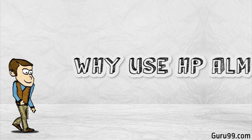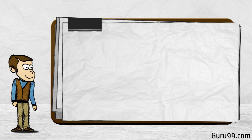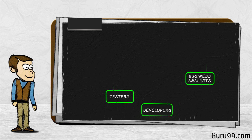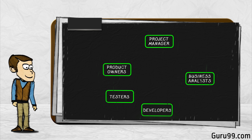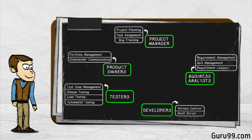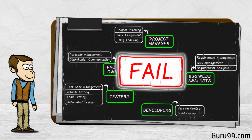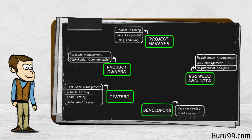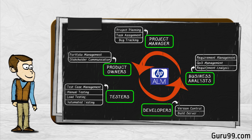Why use HP ALM? The various stakeholders involved in a typical project are the developer, tester, business analysts, project managers, and product owners. These stakeholders perform diverse sets of activities that need to be communicated to all concerned team members. If we do not maintain a centralized repository to record, maintain, and track all the artifacts related to the product, the project will unquestionably fail. We also need a mechanism to document and collaborate on all testing and development activities. Enter HP ALM.